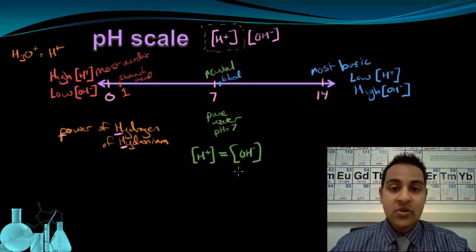So when these two ions are in equal amounts, equal concentrations, we have a pH of 7, and the solution is neutral.